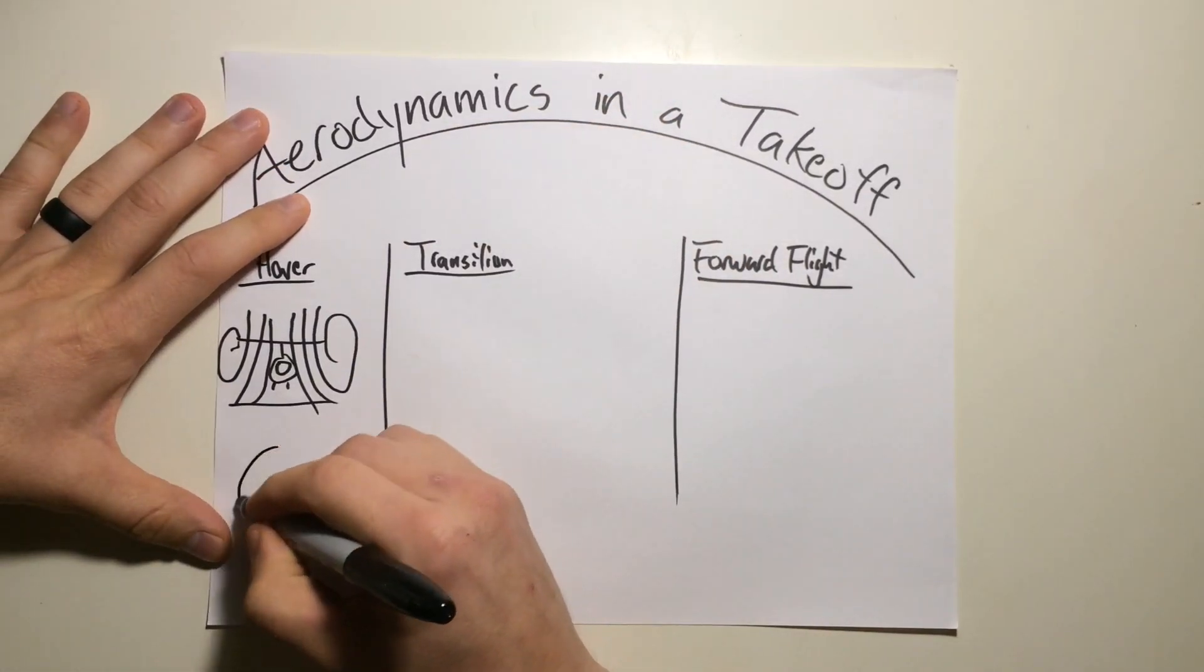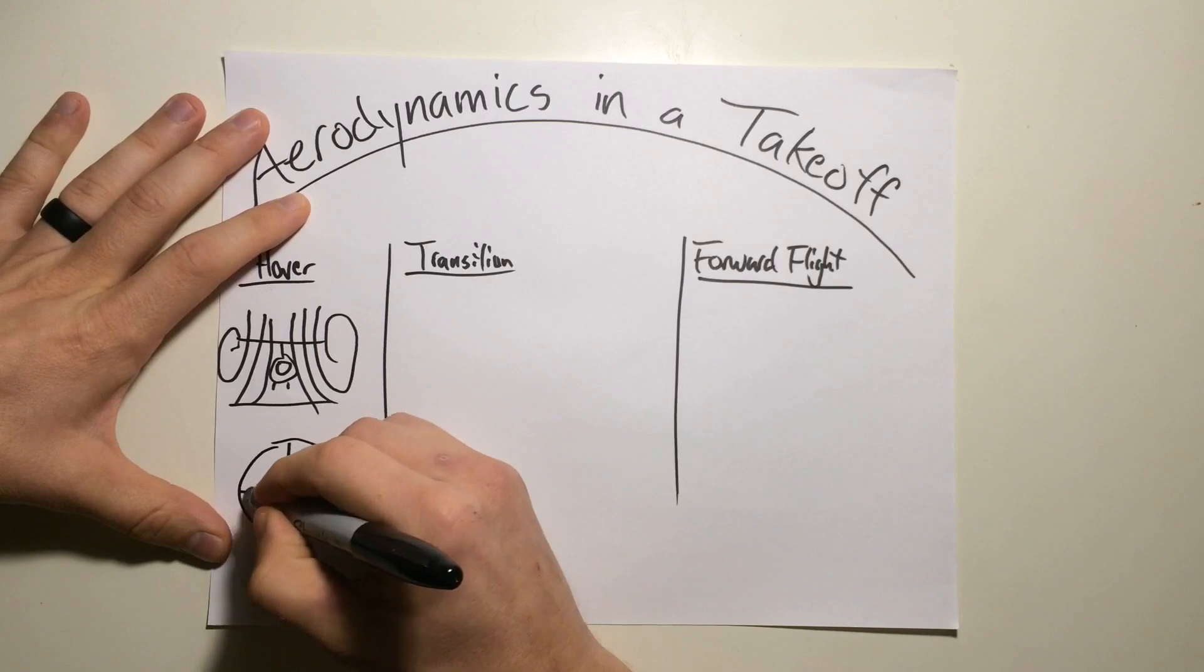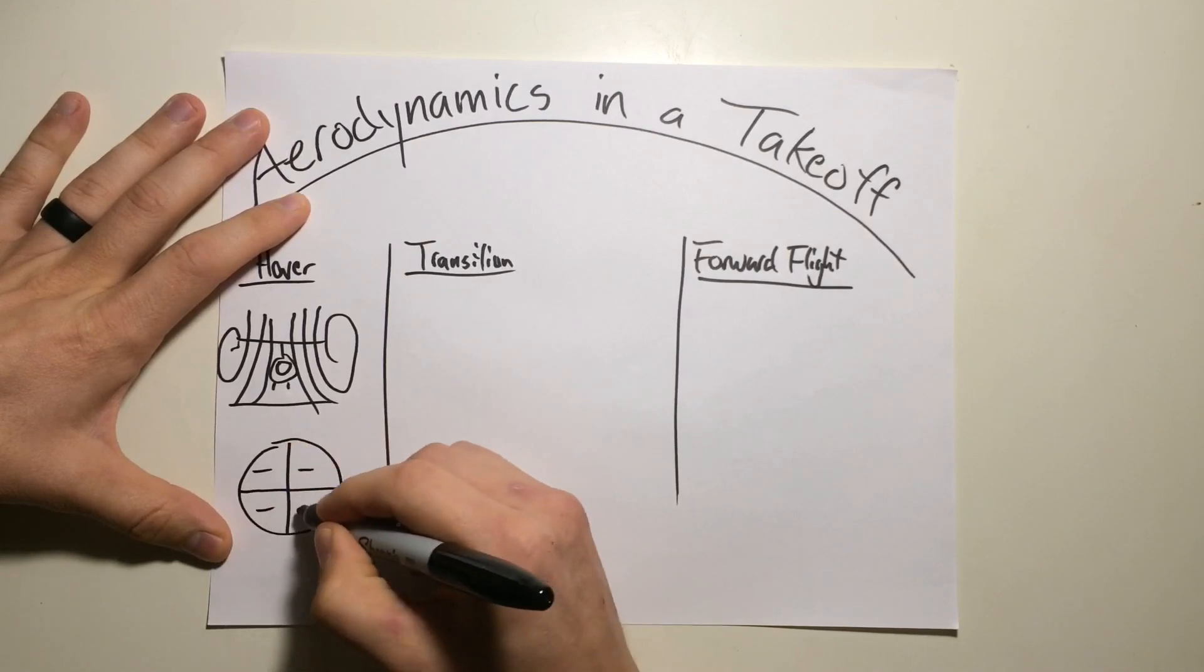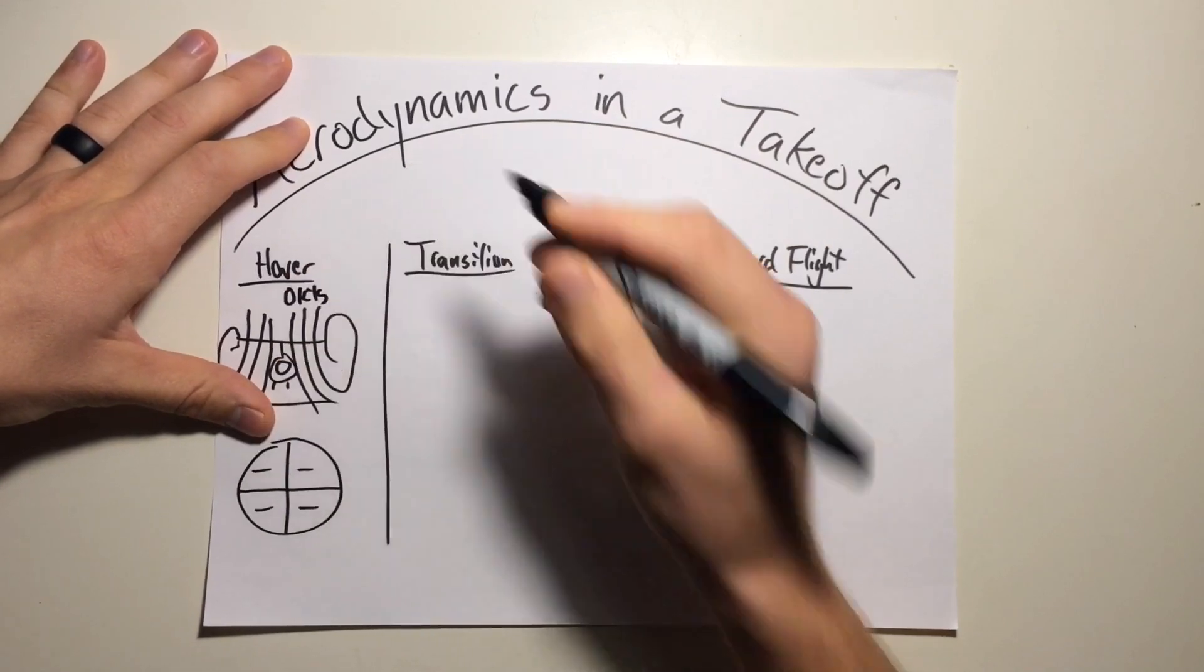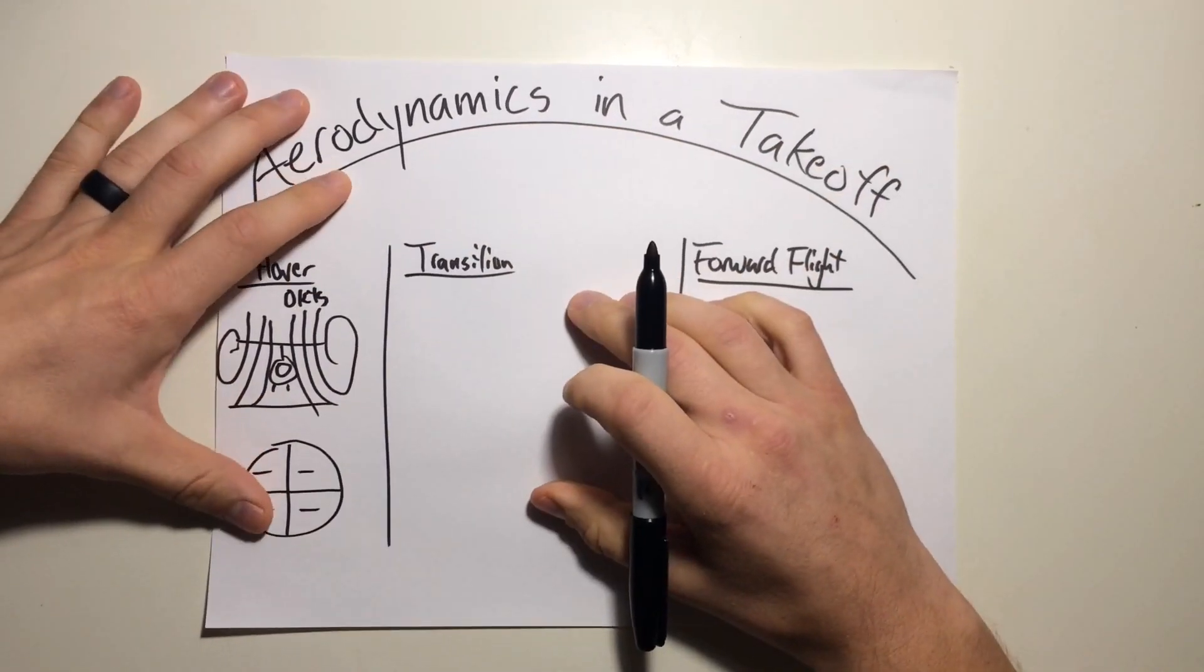So what does that look like on the rotor system? Just for simplicity it's a decrease in efficiency, decrease in lift when operating at a hover. Just for this video we'll call that hover is at zero knots.